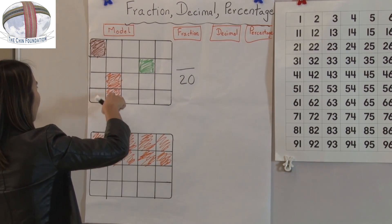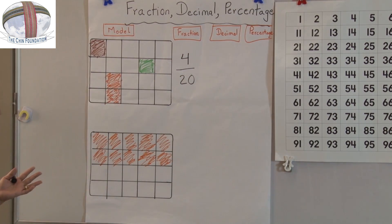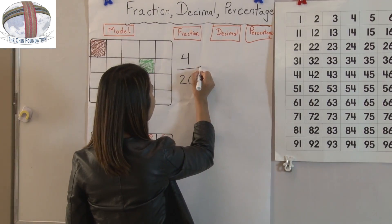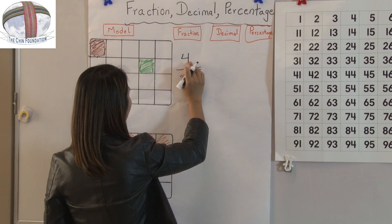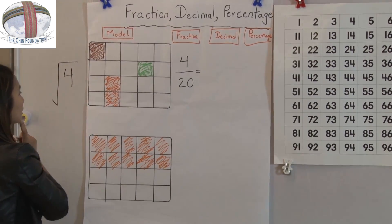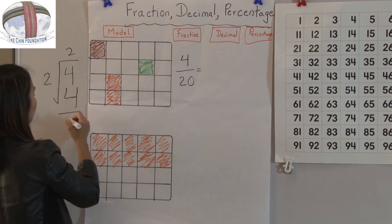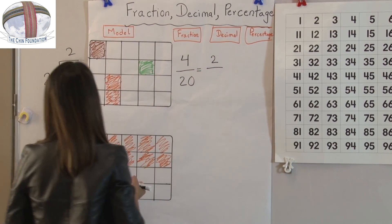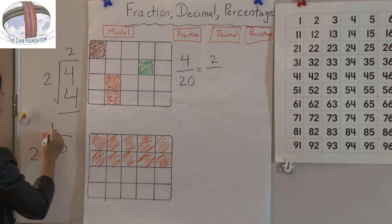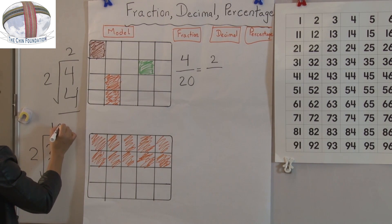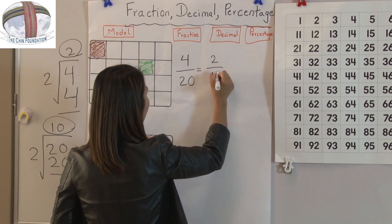I have to count how many colored boxes there are: 1, 2, 3, 4. We can make it smaller — this is too big, so we can make it a smaller number. So let's divide with 2. 2 times 2 is 4, so the numerator gives us 2. Then for 20, we divide by 2 too: 2 times 10 is 20, so the answer is 10. So we can make it the smaller fraction, which is 2 out of 10.